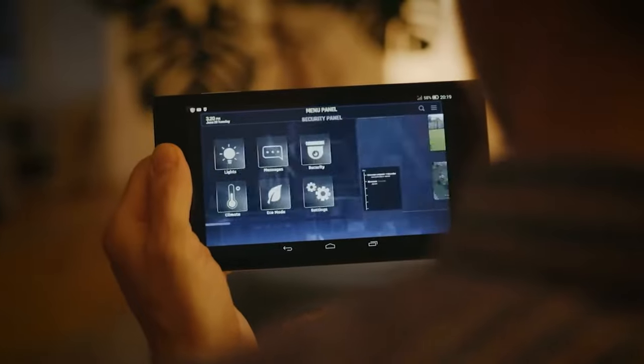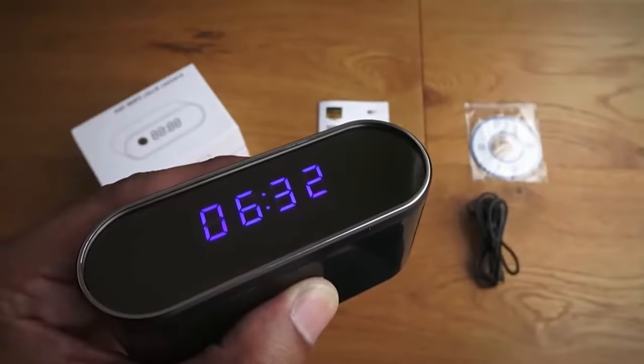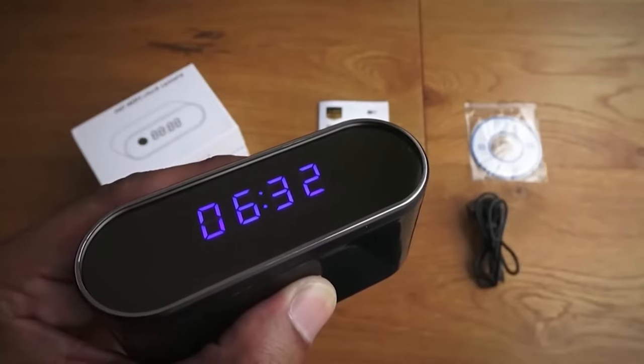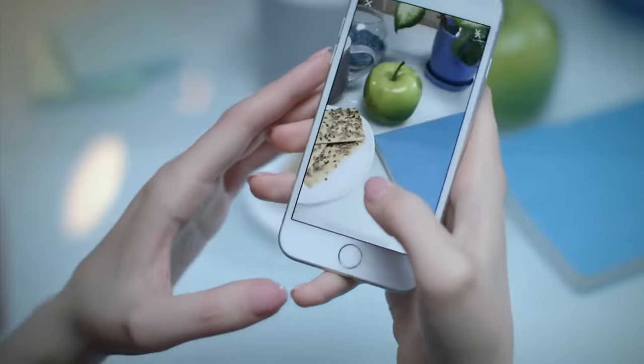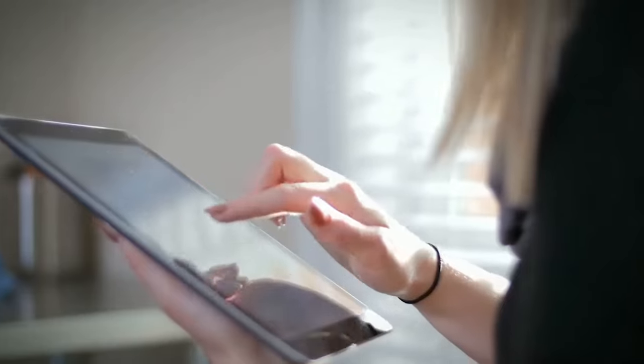But wait, there's more. This clock doesn't just have a camera, it also has a built-in microphone and speaker. That's right, you can talk through the clock and hear what's going on in your room. It's like having your own personal spy gadget, and let me tell you, it's so much fun.